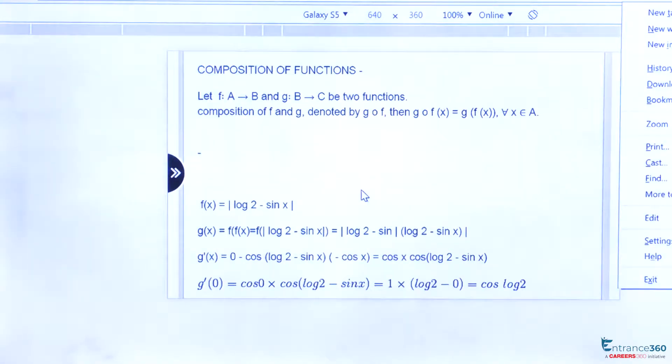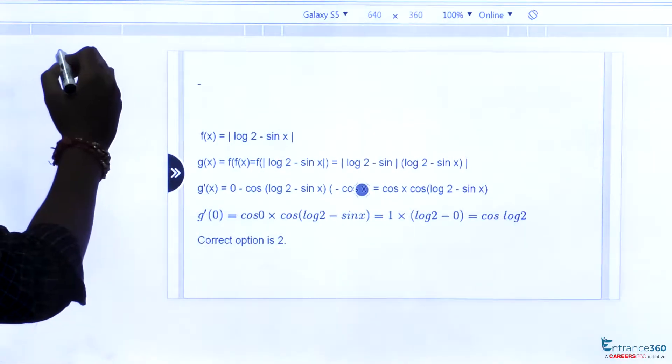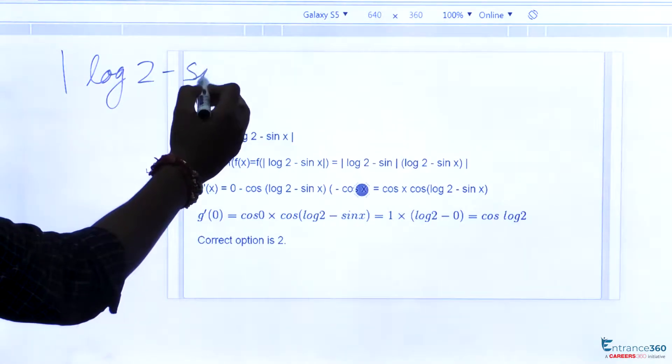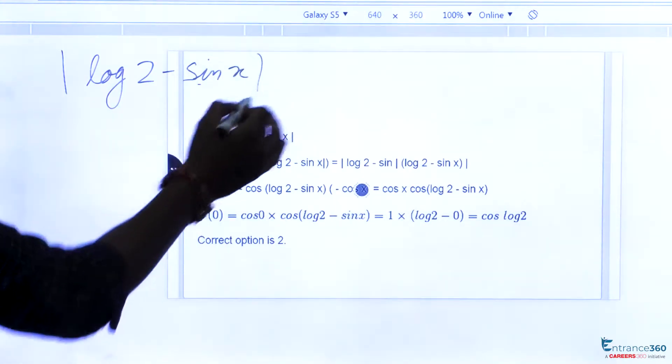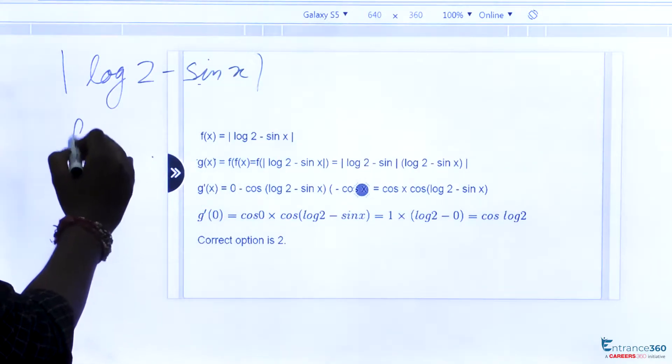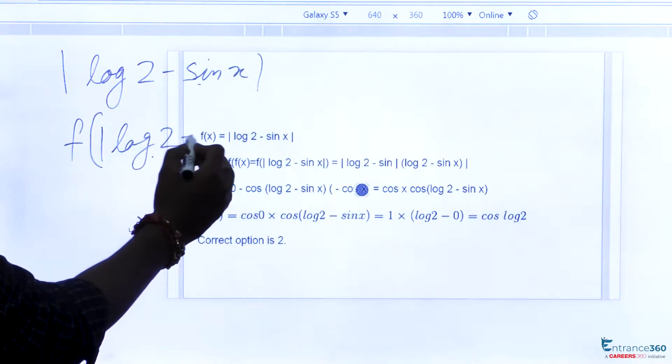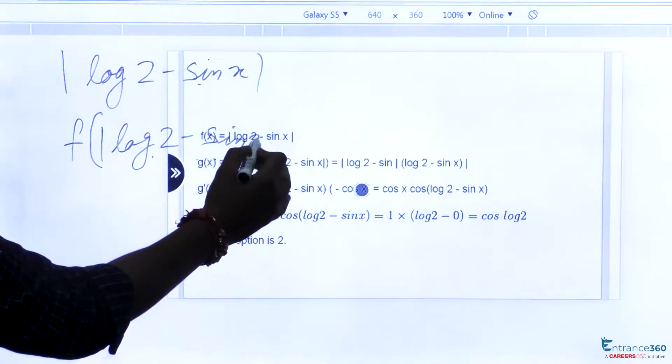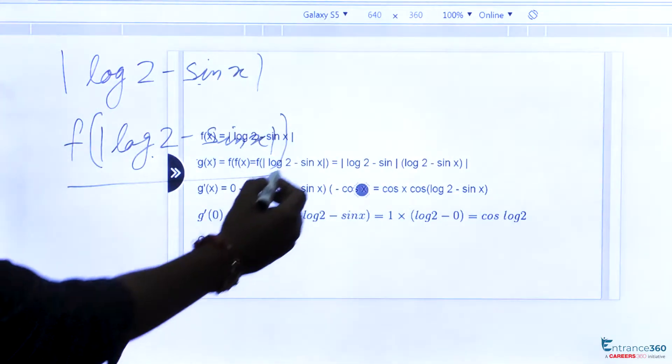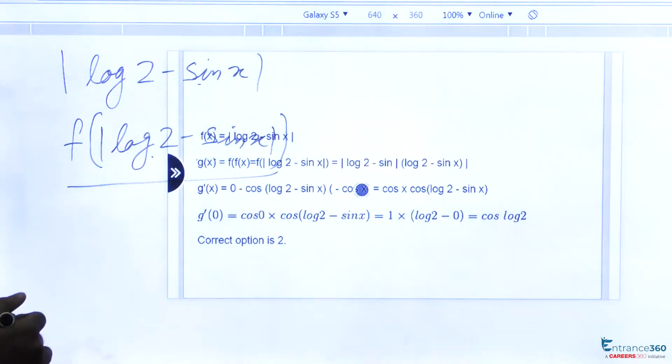Our question says that f(x) equals modulus of log 2 minus sin x, and g(x) is f(f(x)). So we need to find f of modulus of log 2 minus sin x, which will be modulus of log 2 minus sin of log 2 minus sin x.